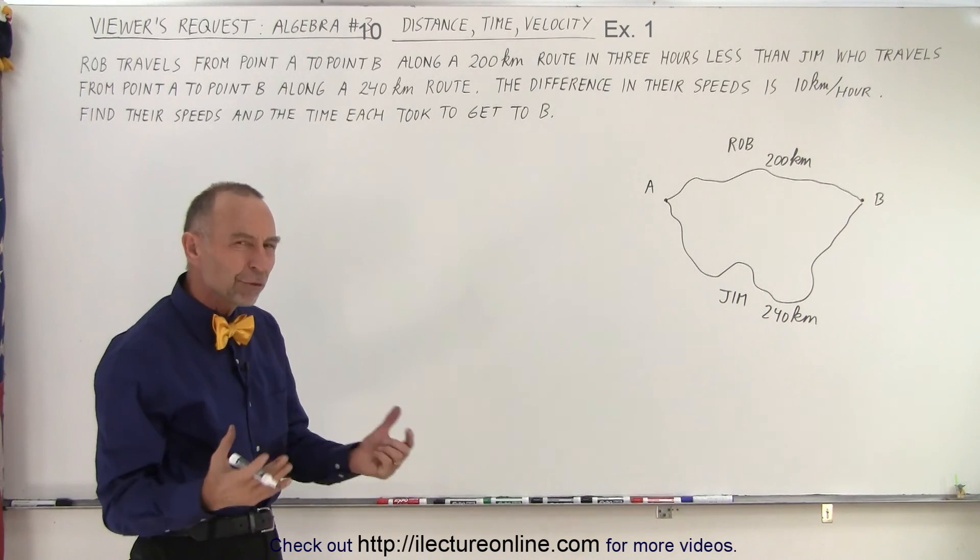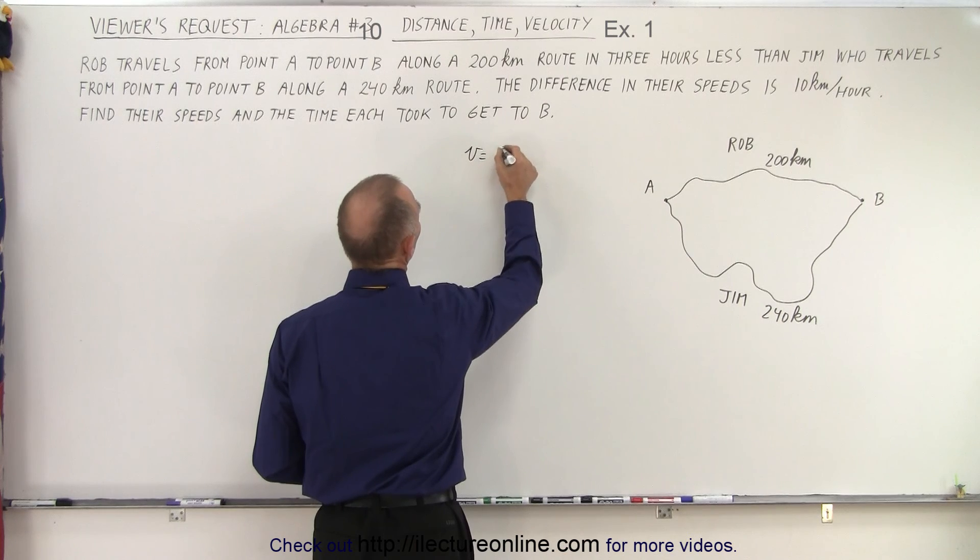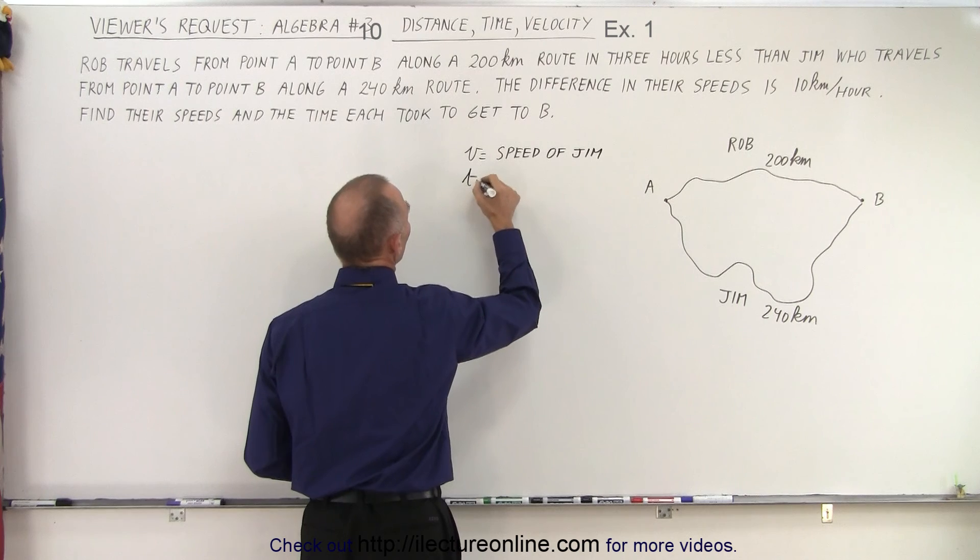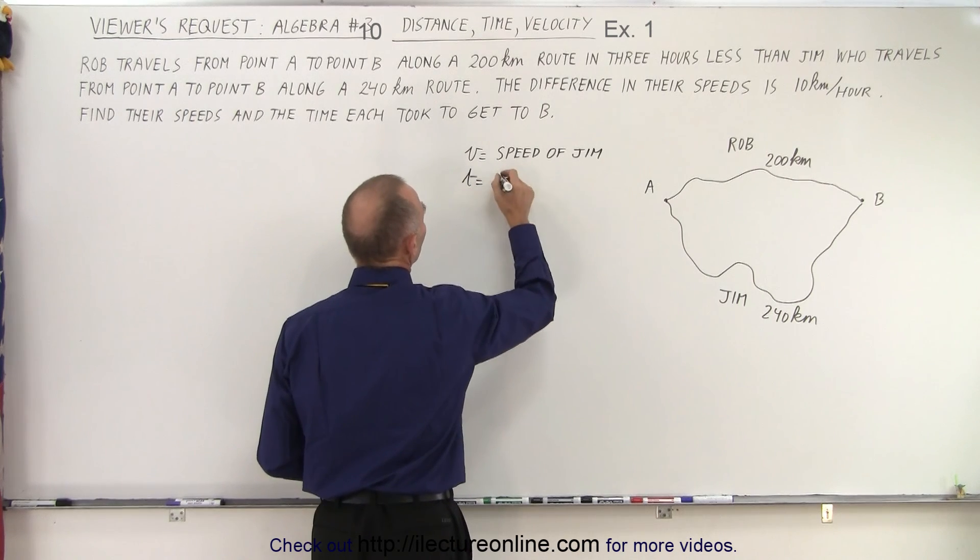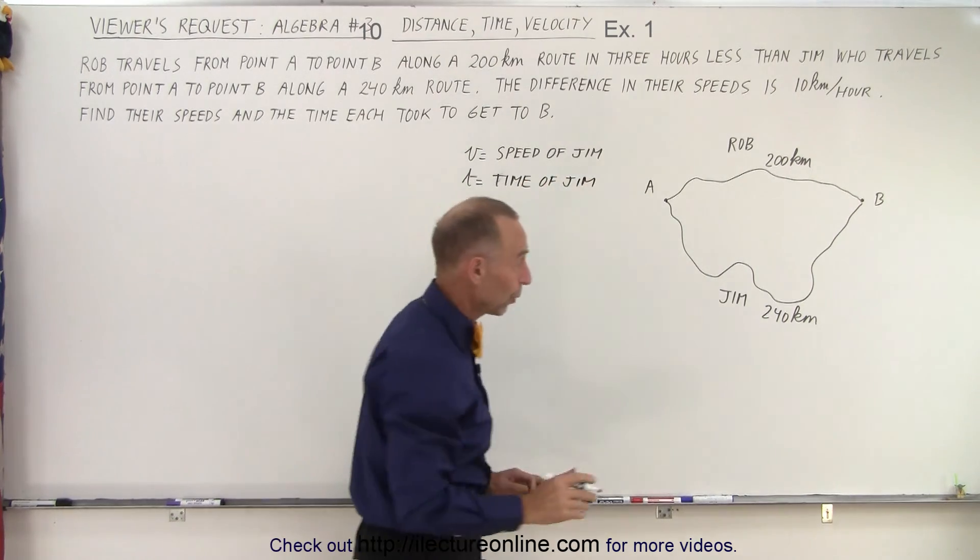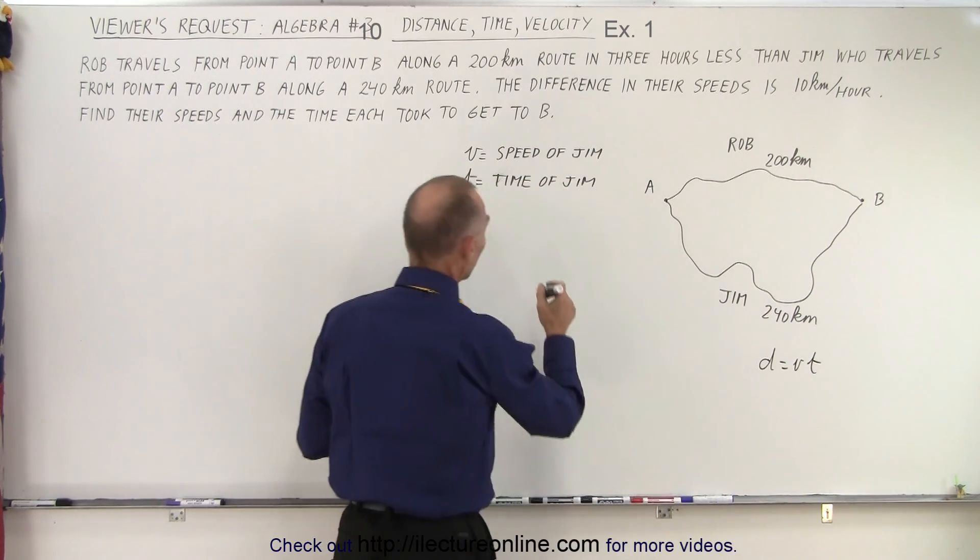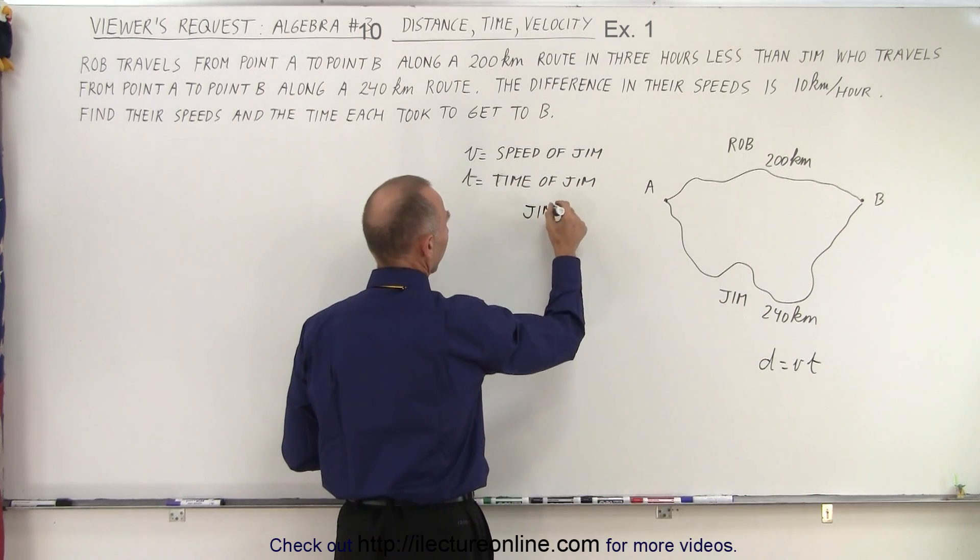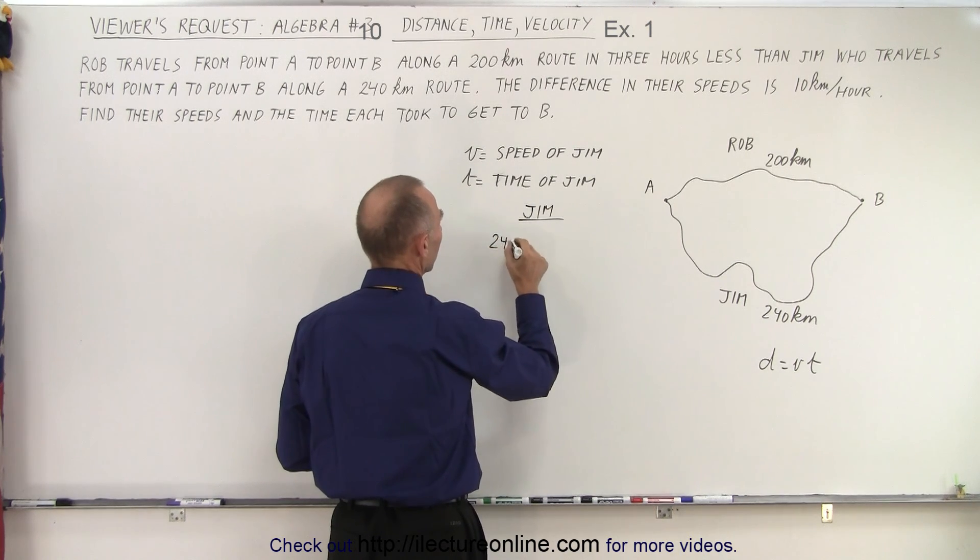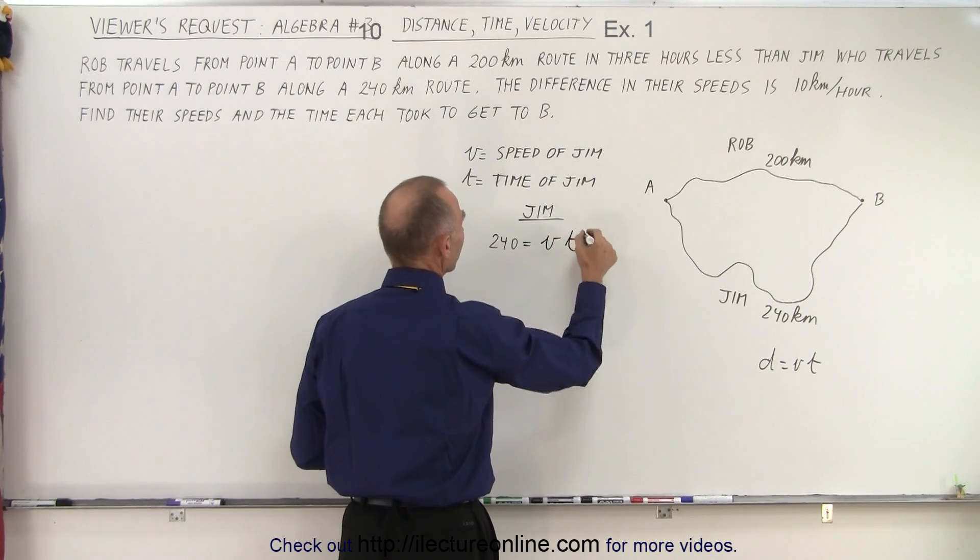Now since we have two variables we need to define them. So let V equals the speed of Jim. And let T equals the time of Jim. And so we are going to use the equation where distance equals velocity times time. So for Jim what would that look like? Well distance would be 240 kilometers equals the velocity which for Jim is V and the time is T.